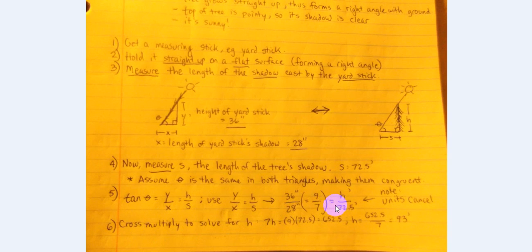So now we're going to actually go through and solve for h. We're going to cross multiply. So we're going to get 7h is equal to 9 times 72.5, that gives you 652.5, that's 7h. And so to solve for h, you would just divide 652.5 by 7, and there you go. You get the height of the tree, 93 feet, so it is a pretty tall tree.